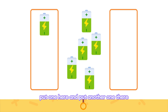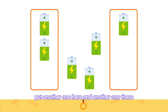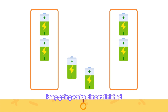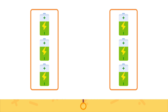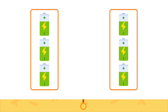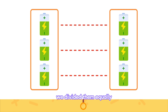We can count one by one. Put one here, and put another one there. There are still batteries left, so let's continue. Put another one here, and another one there. Keep going — we're almost finished. One here, and one there. Finished! Let's check: there are three batteries here and three there. We divided them equally.